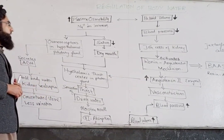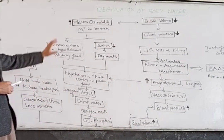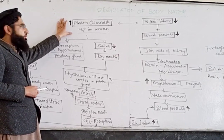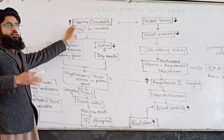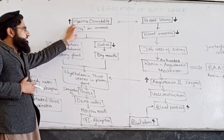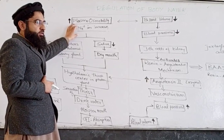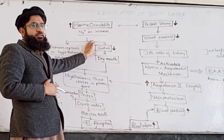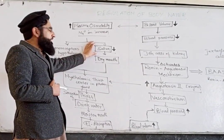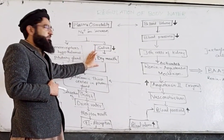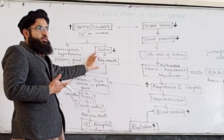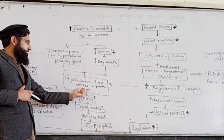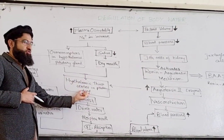If plasma osmolality inside the body increases — for example, sodium ions increase or other electrolytes increase inside the body — it causes a decrease in saliva. When our saliva decreases, our mouth will be dry. This will act on the hypothalamic thirst center.